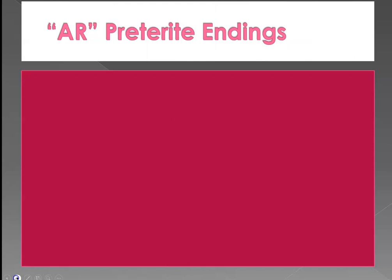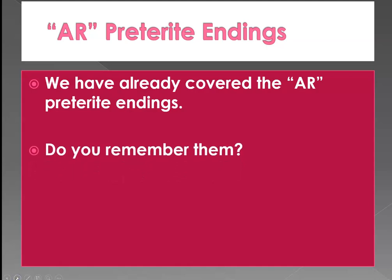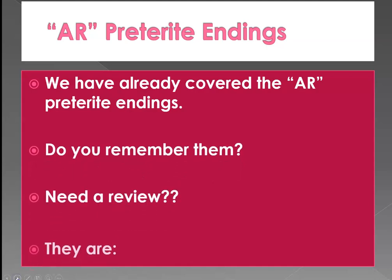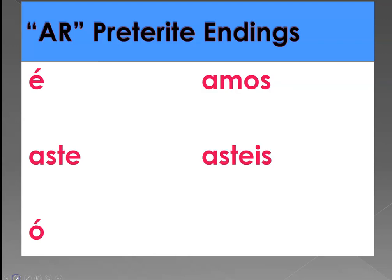AR preterite endings — we have already covered those. Do you remember them? They are: é, aste, ó, amos, asteis, aron.